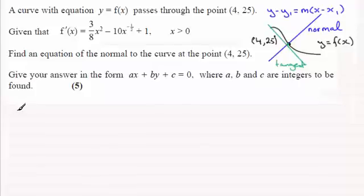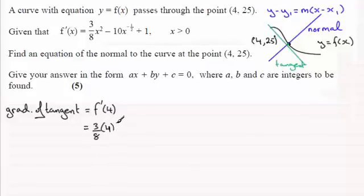So let's start first of all by getting the gradient of the tangent. So gradient of tangent, that's going to be equal to f'(4). And if we substitute 4 into here, we've got (3/8) × 4² - 10 × 4^(-1/2). So that's going to be 1 over the square root of 4. It might be easier just to write it like that. And then we've got plus 1. And so working this out, it comes to 2.